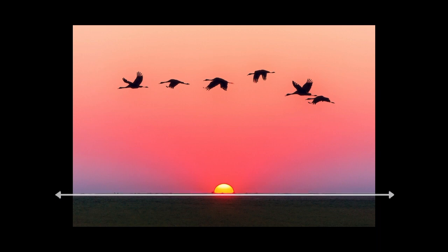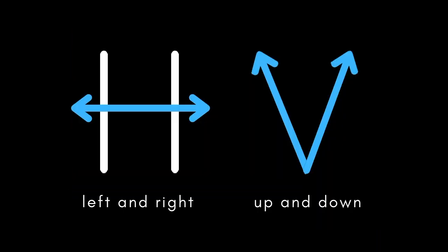If that doesn't help, you can remember the difference by remembering that the capital H has a horizontal line in it, while the lines in a V go up and down.